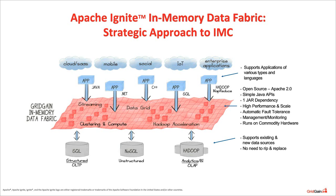All of these components can be used independently from each other, but when used together they provide a nice integration that improves overall performance and scale. For example, if you use data grid together with compute grid and need to send a computation to a node, you want to make sure that computation goes exactly to the node where the data resides. Otherwise, you'd create a lot of extra network traffic and most likely worsen scalability. The same goes for streaming and service grid.